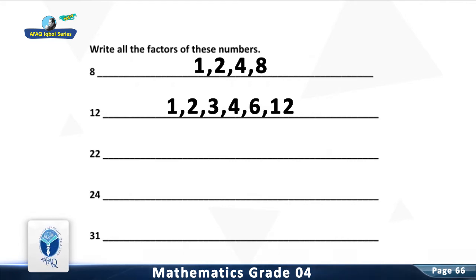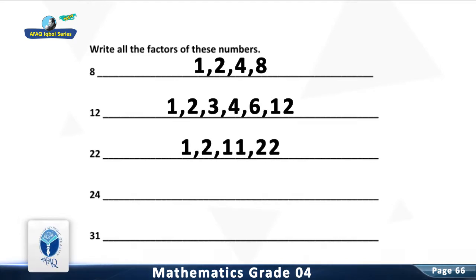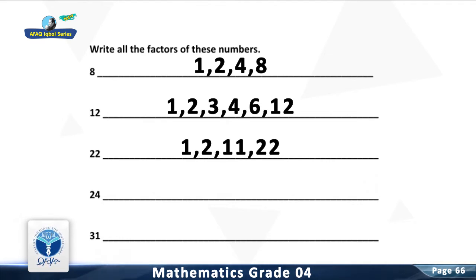Question 3: Write all the factors of 22. You are right. The factors of 22 are 1, 2, 11, and 22.